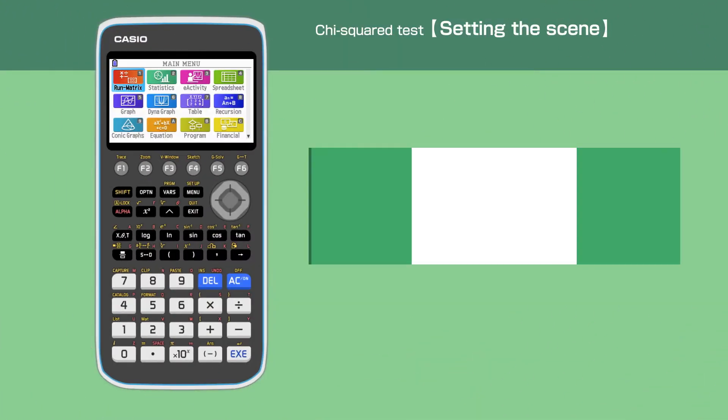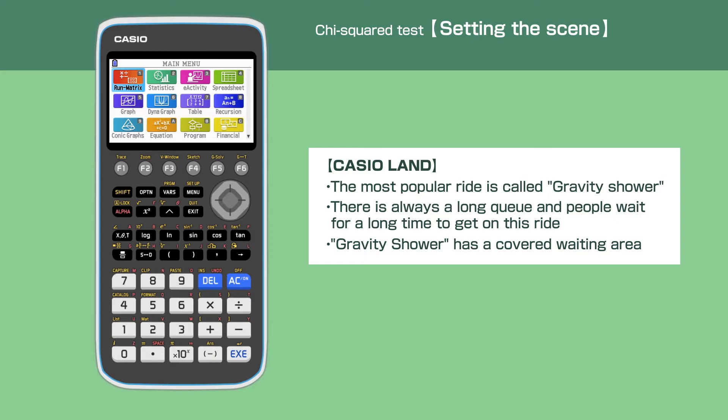The theme park Casio Land has 32 rides. The most popular ride is called Gravity Shower. There is always a long queue and people wait for a long time to get on this ride. Most rides in Casio Land are outside except Gravity Shower, which has a covered waiting area.